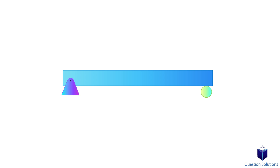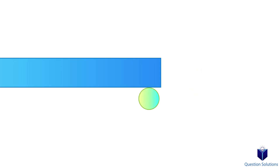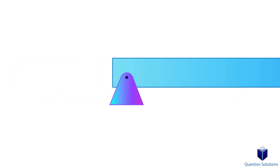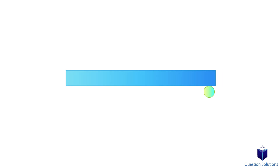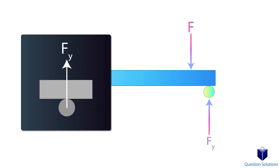Here we have a bar. There are two support reactions: one is a roller and the other is a pin. Focusing on just the roller first — assume that our object can move and we apply a force from the left. Notice how our bar moves. That's because a roller can only prevent vertical movement. If we apply a force from the top, the roller prevents the bar from moving down by creating an opposite force. So a roller can only exert a vertical force, preventing translation in the vertical direction.